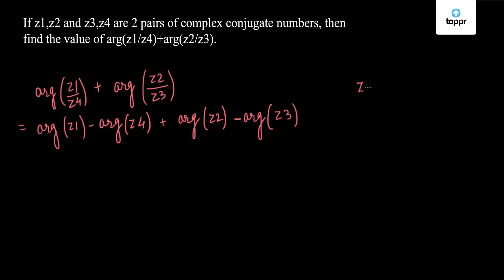Now we have been given that Z1 and Z2 form a complex conjugate pair, and Z3 and Z4 also form a complex conjugate pair.